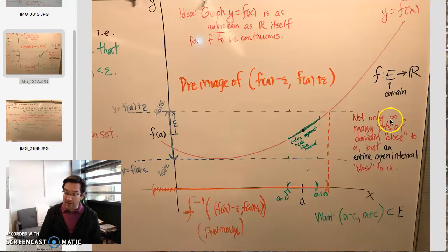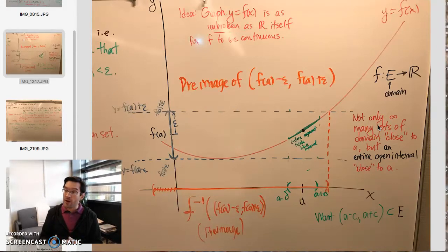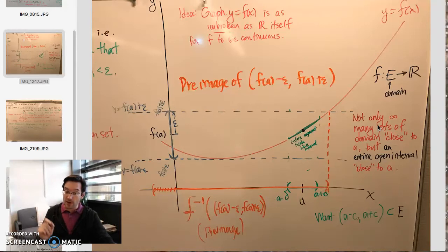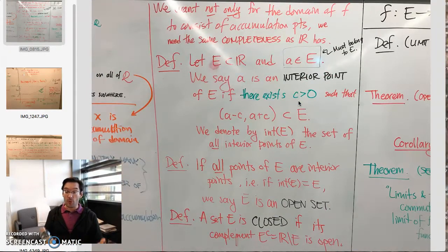It's not ultimately going to be enough to just insist that the domain of a continuous function consists of accumulation points. We also want there to be so many points that we can fit an entire open interval inside the domain near any point at which f is to be continuous. That led us to the conversation about how to define what it means for a set to be an open set.